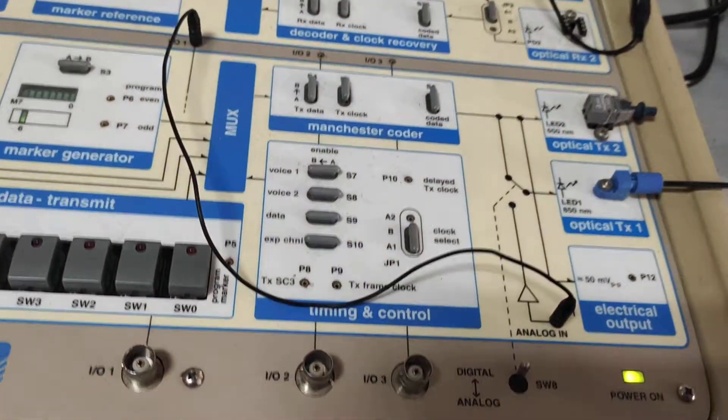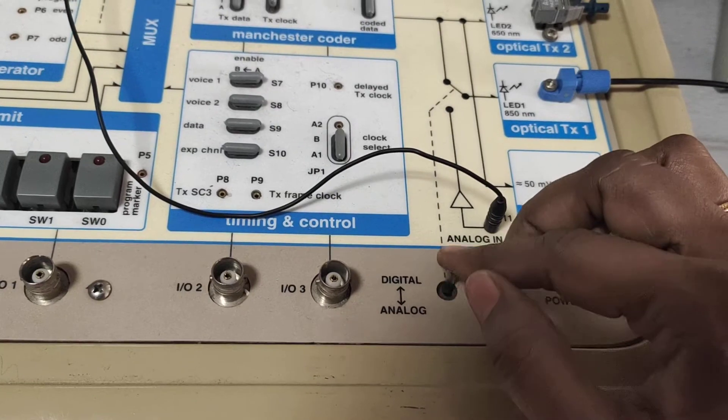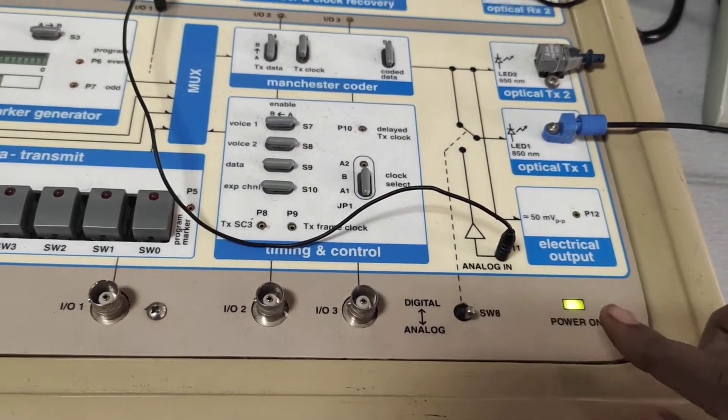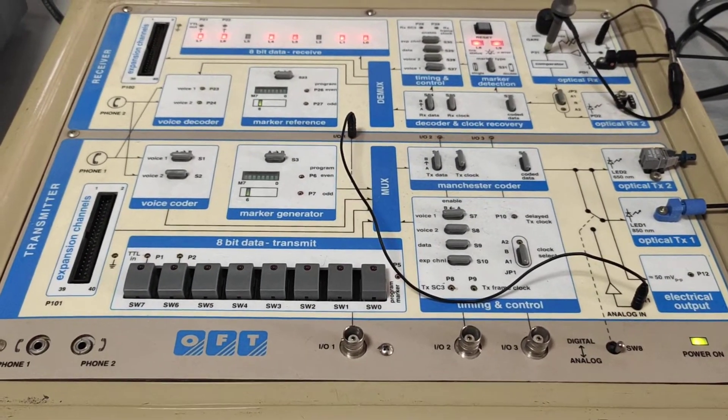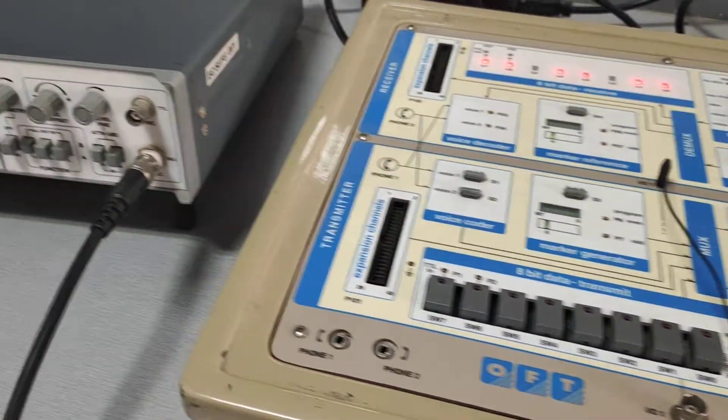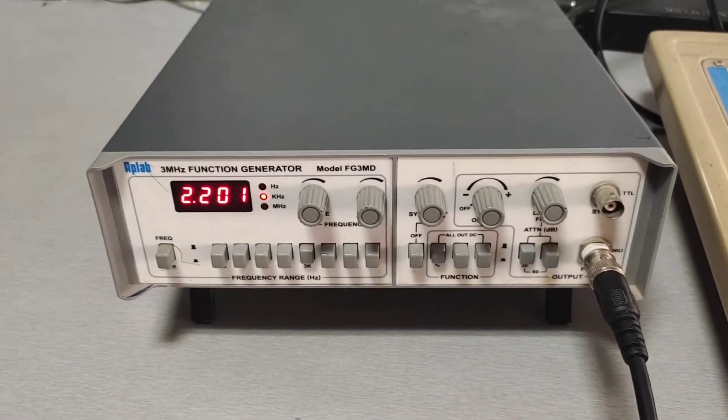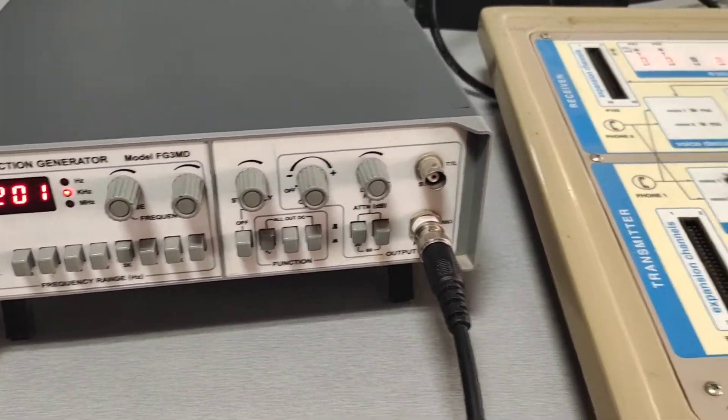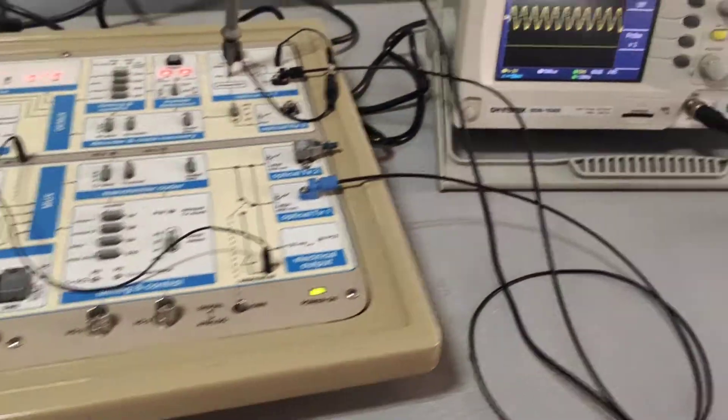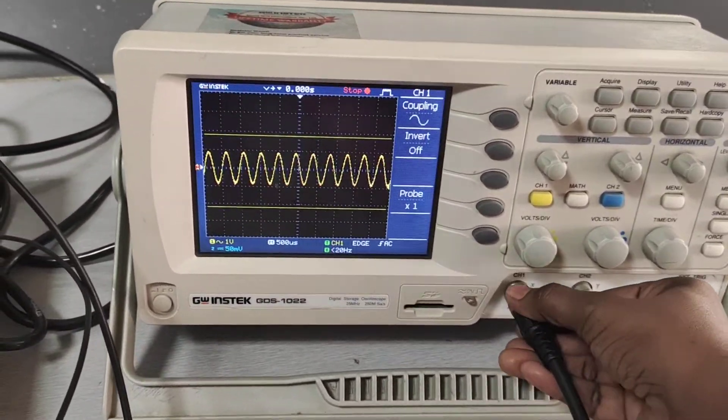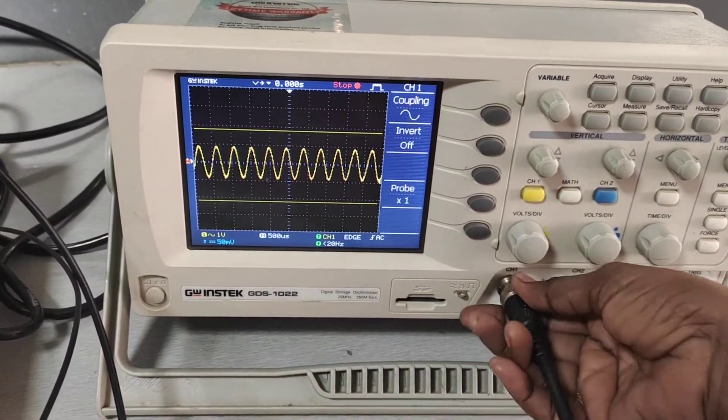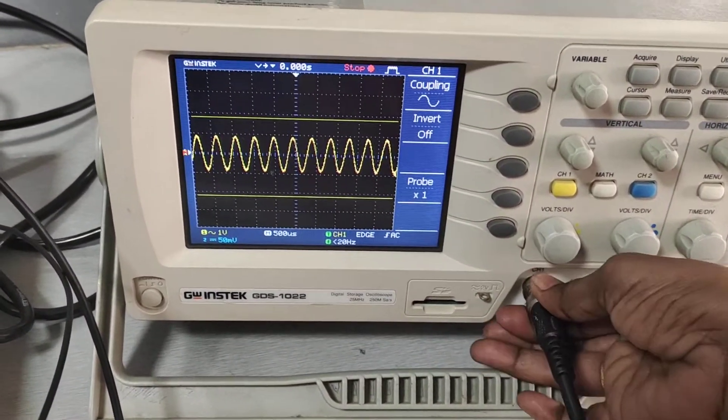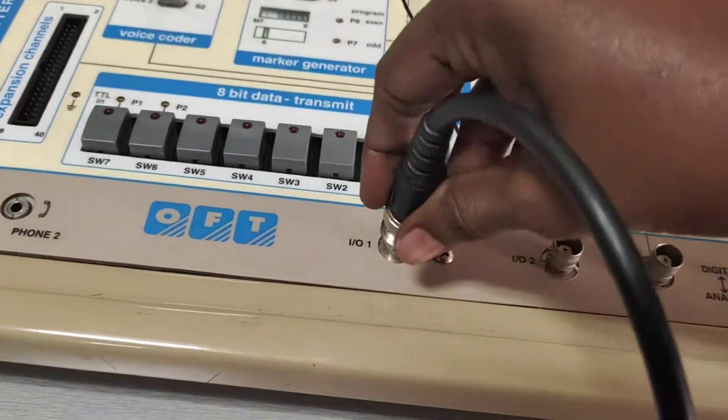Then, we have to keep the switch position in analog. We are going to give the sinusoidal input signal. We are going to set a sinusoidal input signal with 2 volt amplitude and 2 kilohertz. Now, we are checking the input signal with the help of the CRO. After setting up the input signal, we are going to give the input to the IO1 port of the optical fiber.